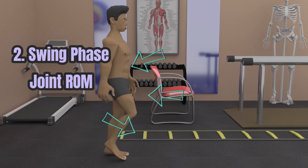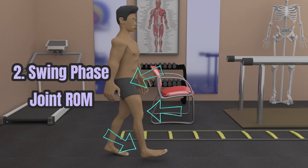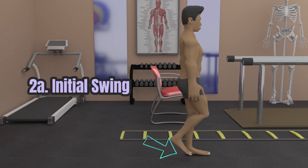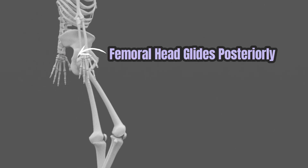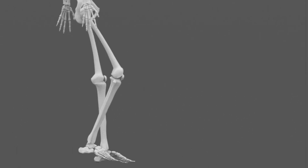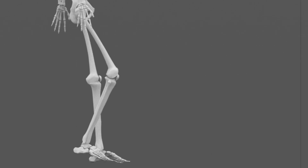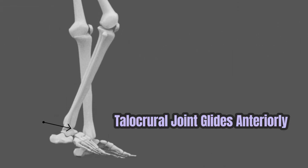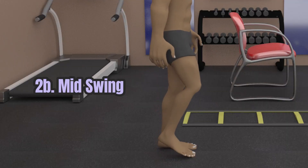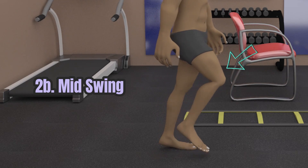The swing phase, where the foot is off the ground, is further subdivided into three sub-phases. The initial swing starts at toe-off and ends when the swing leg is parallel to the stance leg. The femoral head here is glided posteriorly to allow hip flexion. The tibia glides posteriorly and the patella inferiorly glides to allow knee flexion, while the talocrural joint glides posteriorly to allow dorsiflexion.